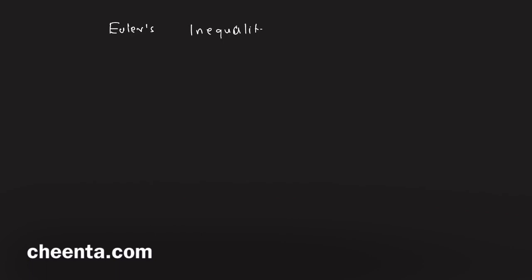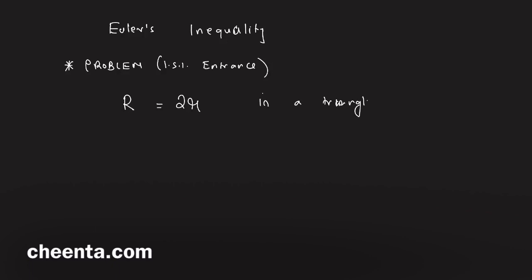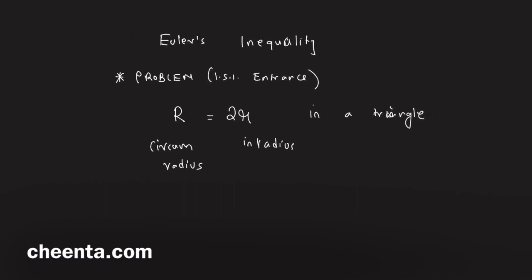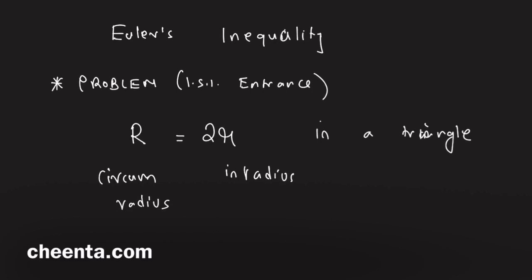Today we will learn the concept of Euler's inequality, but we will use a problem to understand its application first. This problem is from ISI entrance and also appeared in some Soviet olympiads. The problem states that for a particular triangle, the circumradius R is equal to two times the inradius r — a very special case, not always true.